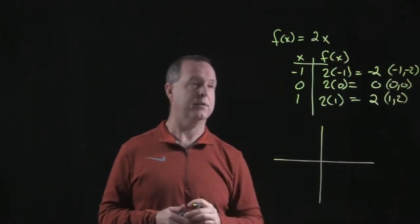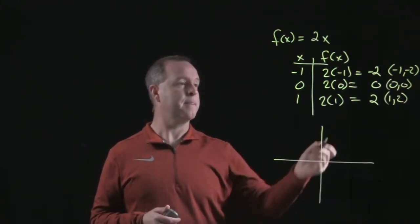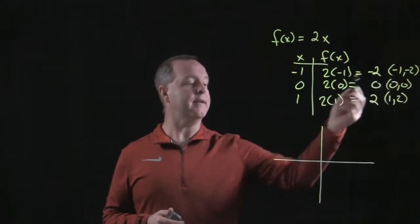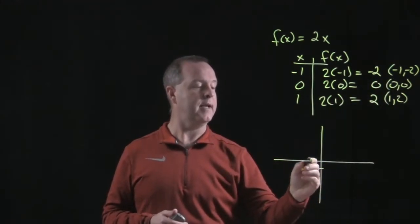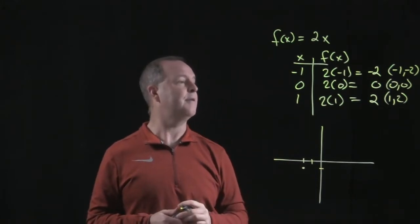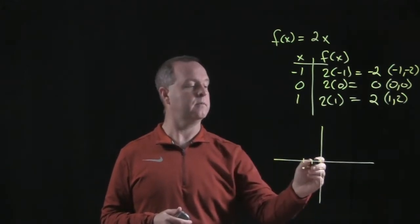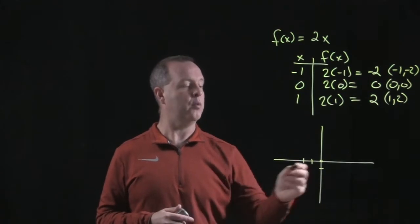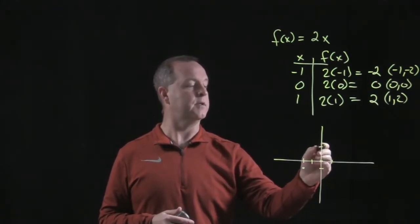So that I can draw just a rough graph. I know that I have a point of negative 1 and negative 2. I have a point of 0 and 0, and I have a point of 1 and positive 2.